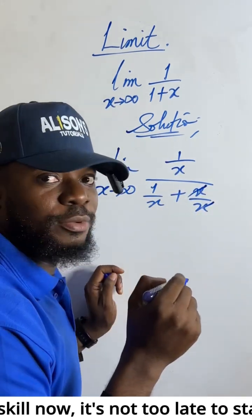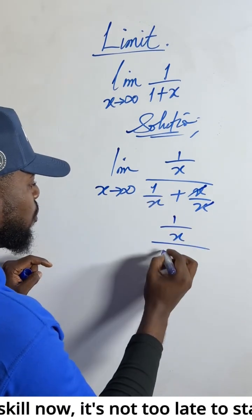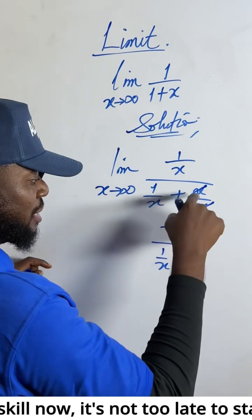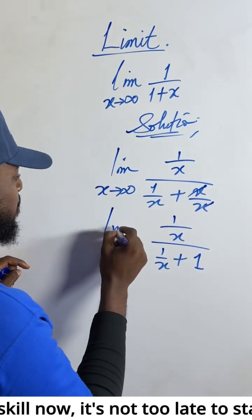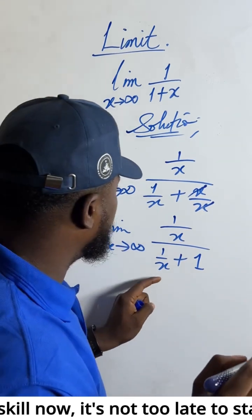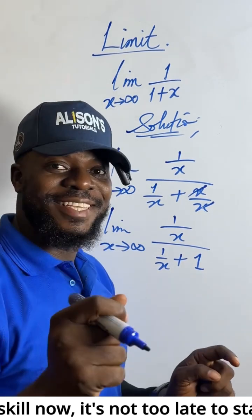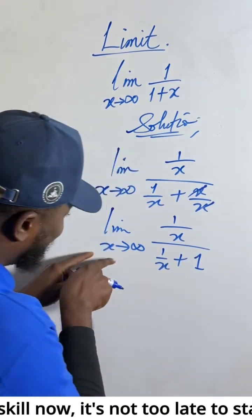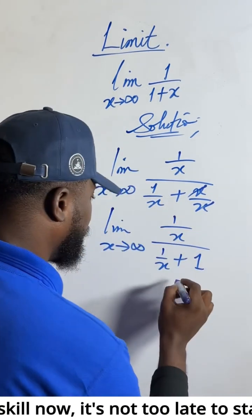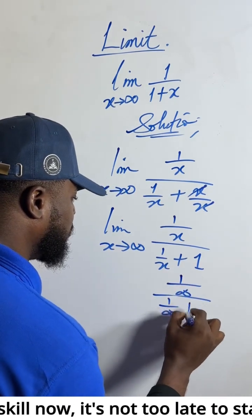This term and this term will cancel out. What will remain is one over x divided by one over x plus one. If you don't divide, something that isn't zero causes a problem. So what I'm saying is that anytime we can't resolve it, we use substitution — put in the infinity sign — so we get one over infinity divided by one over infinity plus one.